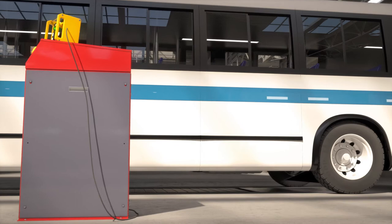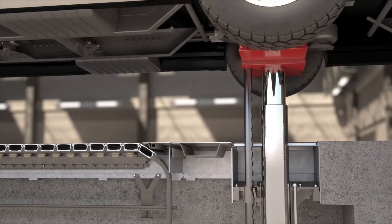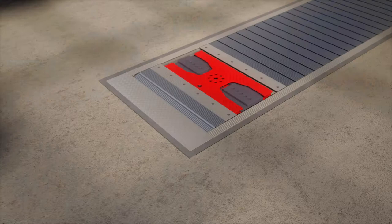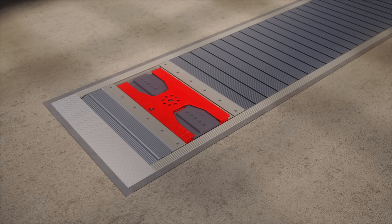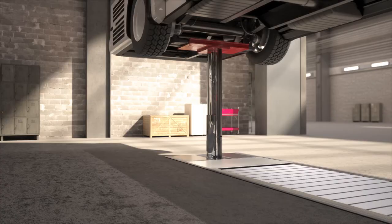The first locking point on the Diamond Lift engages almost directly after the tires clear the floor, which makes it ideal for working on wheels or brakes. The anodized aluminum flush-to-the-floor trench covers have an integrated anti-skid profile.